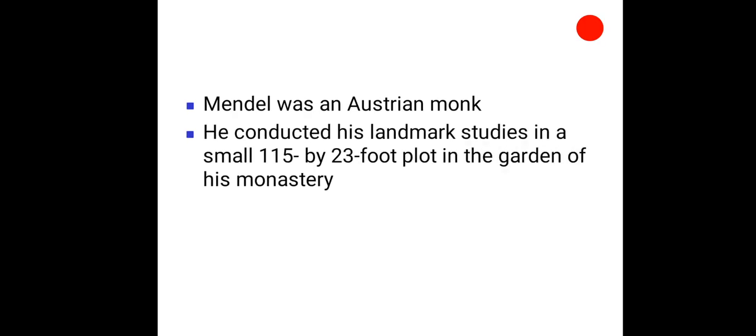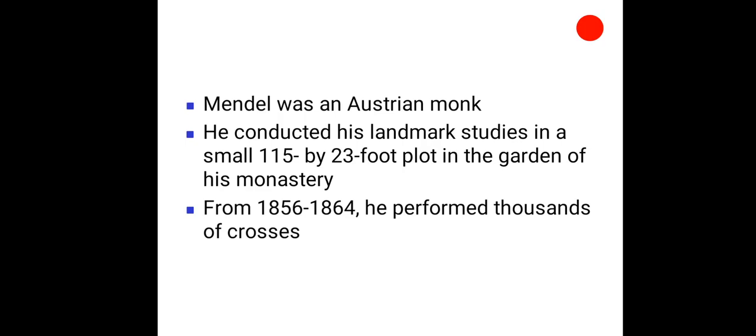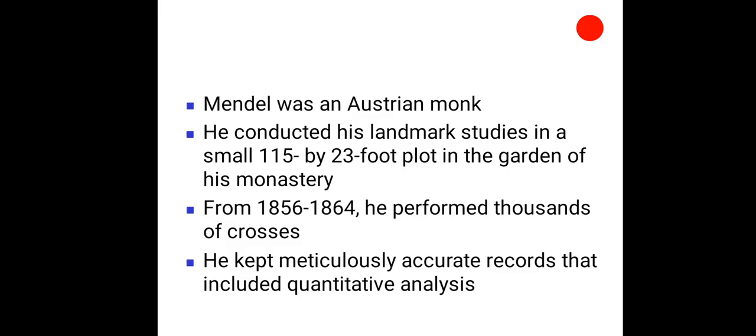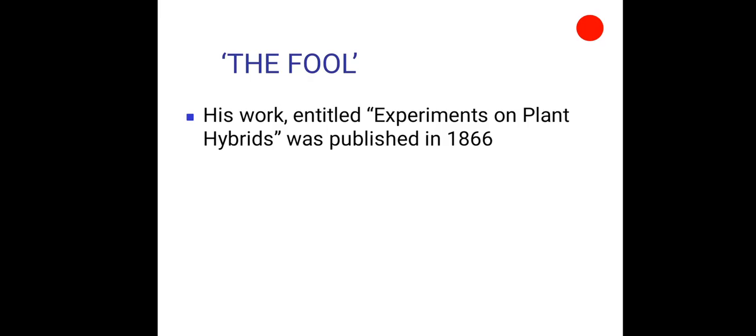Mendel was an Austrian monk. He conducted his landmark studies in a small 115 by 23 foot plot in the garden of his monastery. From 1856 to 1864, he performed thousands of crosses. He kept meticulously accurate records that included quantitative analysis. His work, entitled Experiments on Plant Hybrids, was published in 1866, which was ignored for 34 years.